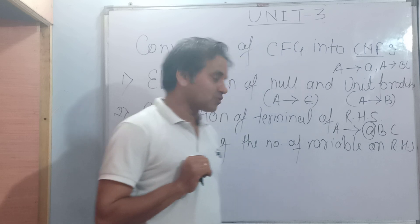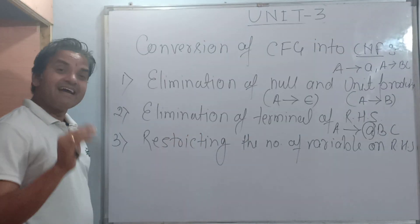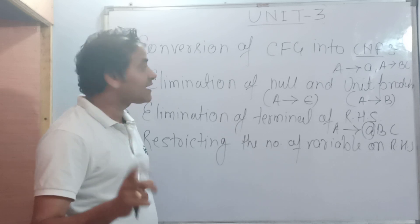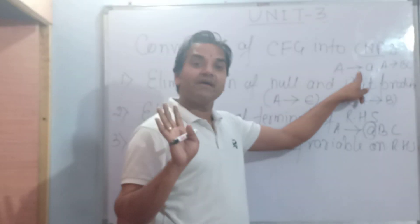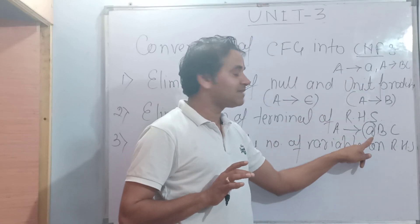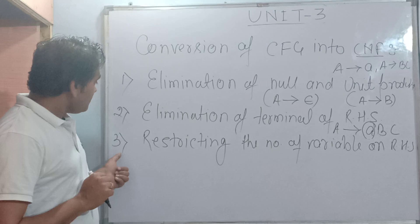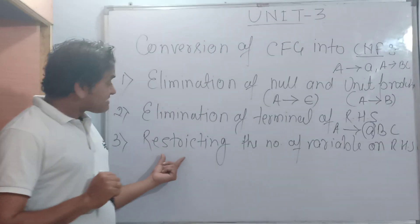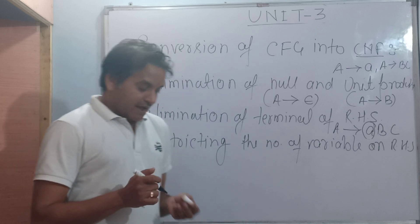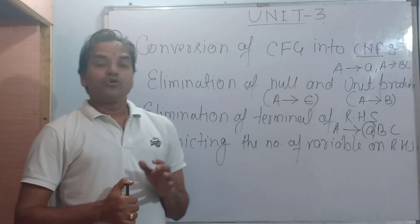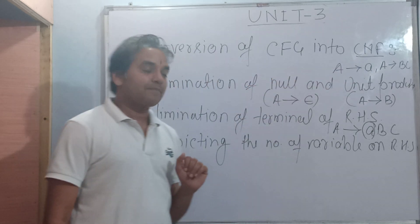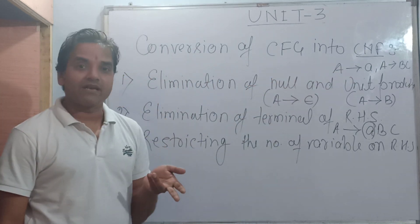The third step is to restrict the number of variables on the right-hand side. The right-hand side should have exactly two variables — that is acceptable in CNF. If there are more than two variables on the right-hand side, you need to convert them into two-variable form.